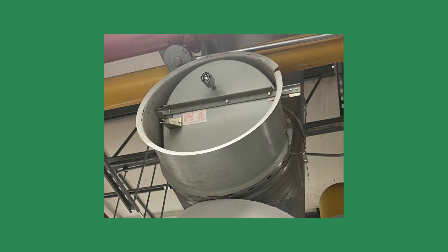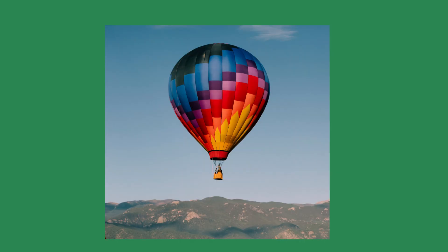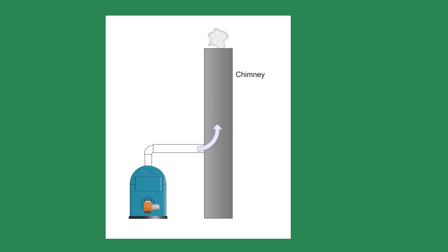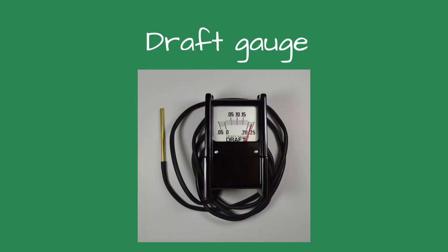To understand how the barometric damper operates, we should understand draft. We all know that when air is heated, it will rise. As the hot air from the boiler rises up the stack, it is replaced by cooler air. This cooler air will push the warmer air up the stack, causing flow or draft.